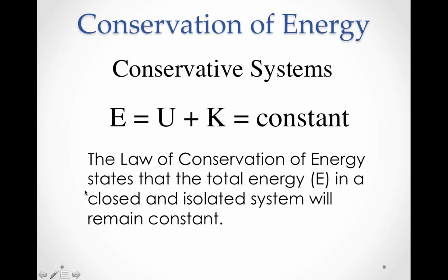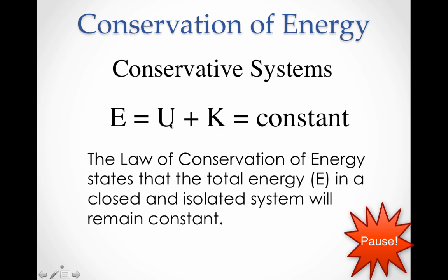The law of conservation of energy states that the total energy in a closed and isolated system remains constant. That's really what this equation is telling us. A pendulum keeps going back and forth because the energy keeps sloshing back and forth, transferring between potential and kinetic energy.